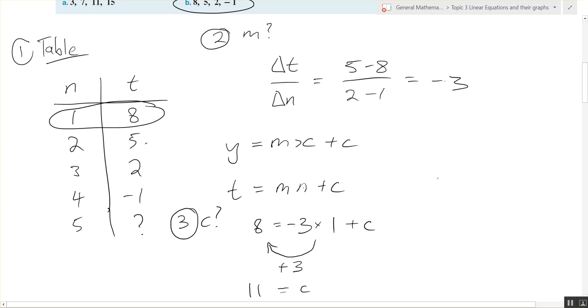I have the C, I have the M. So step four, T equals negative three N plus 11. Four steps.